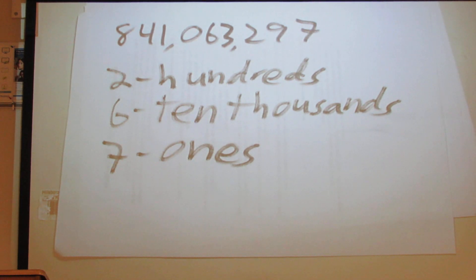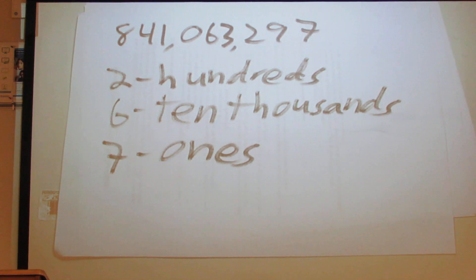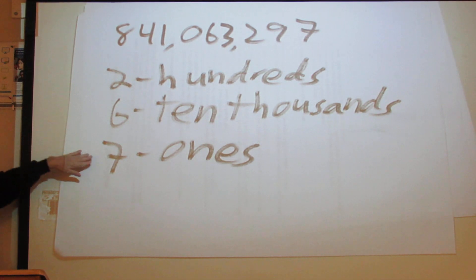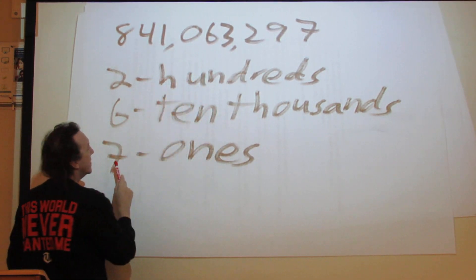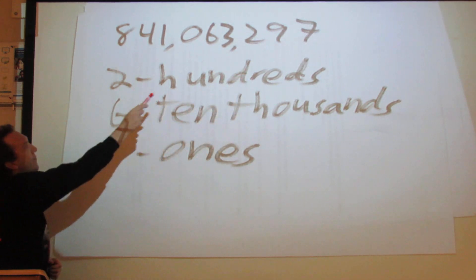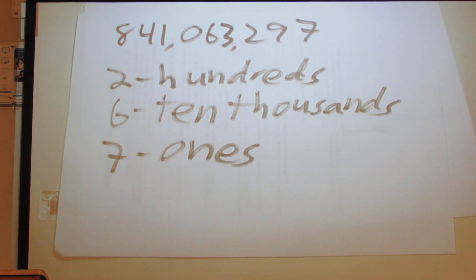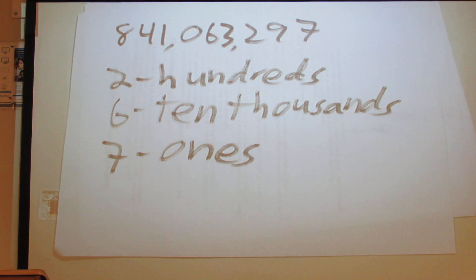The first question will give you a large number and ask you to identify the place value of any given digit — they'll give you three. Make sure you put the 's' at the end; it does say to do that and it counts for spelling. So if it says to do the two, the six, and the ten: the two is in the hundreds spot, the six is in the ten thousands, the seven is in the ones. If it gave you nine you would say tens, three would be thousands, zero would be hundred thousands, one would be millions, four would be ten millions, and eight would be hundred millions.